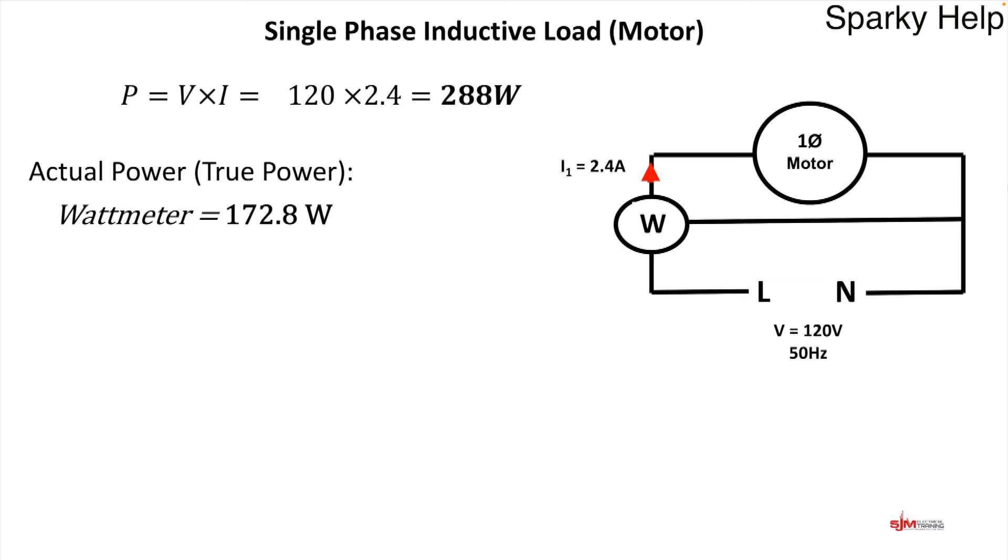We have basically energy being drawn from the supply and then given back. So it's being borrowed, which is a difficult concept to get your head around. So let's go back to that formula up at the top there. Then we've got power equals V times I. Well, it's not power. It's what you've actually calculated. There is something called apparent power, the VA of the circuit. So we have the VA of the circuit of 288 VA.